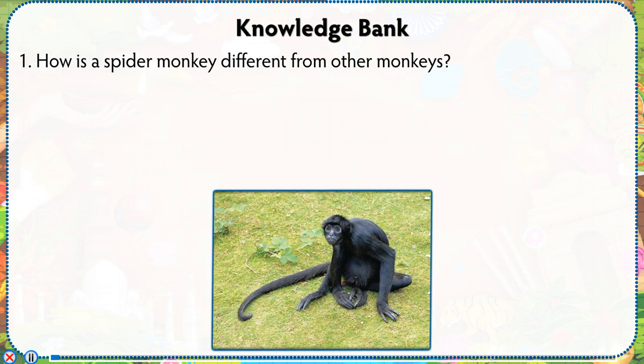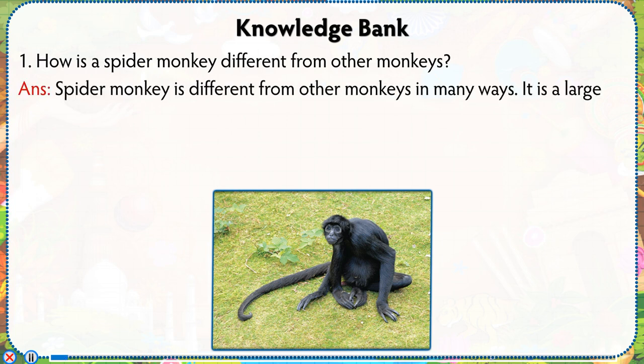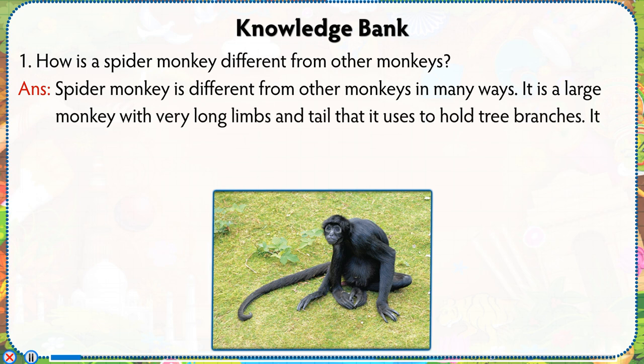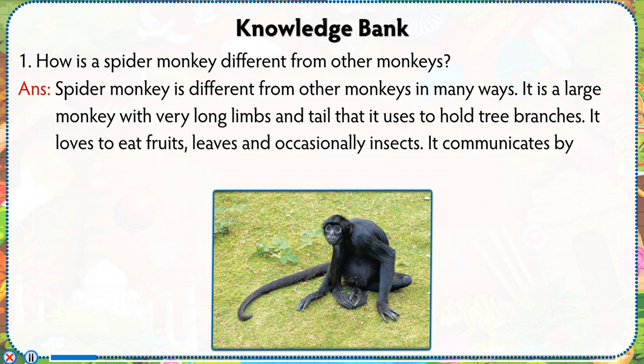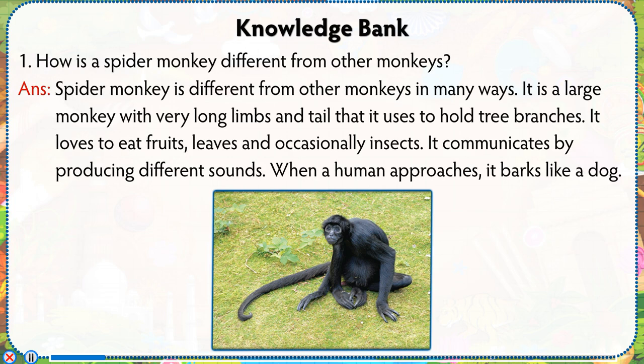Knowledge Bank: How is a spider monkey different from other monkeys? Answer: Spider monkey is different from other monkeys in many ways. It is a large monkey with very long limbs and tail that it uses to hold tree branches. It loves to eat fruits, leaves and occasionally insects. It communicates by producing different sounds. When a human approaches, it barks like a dog.